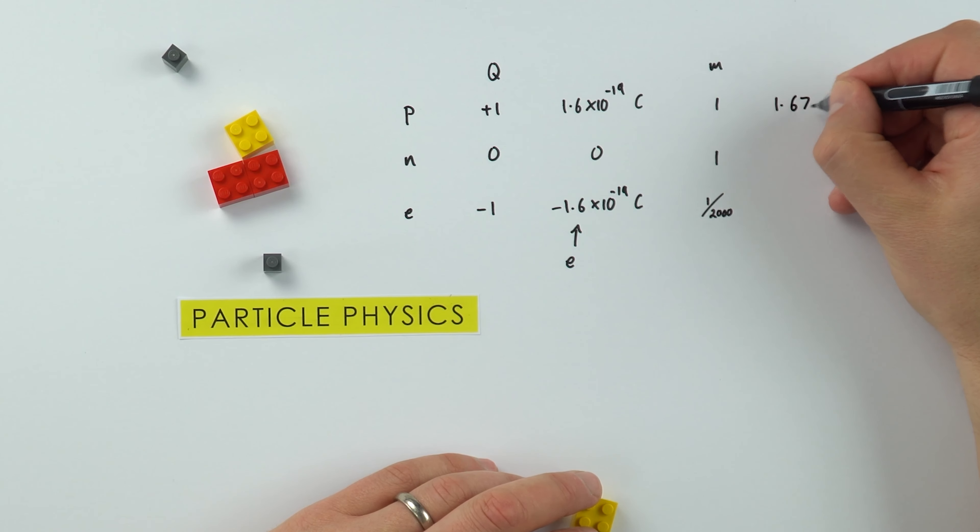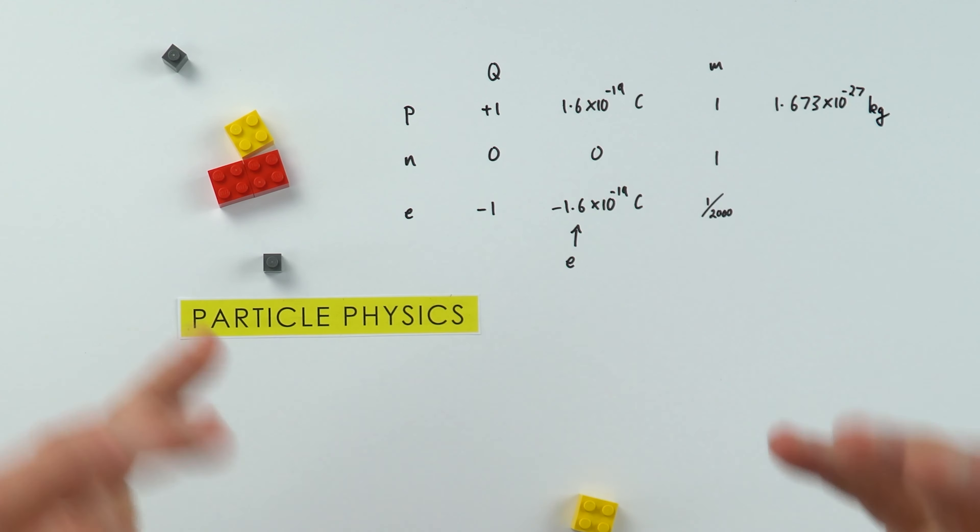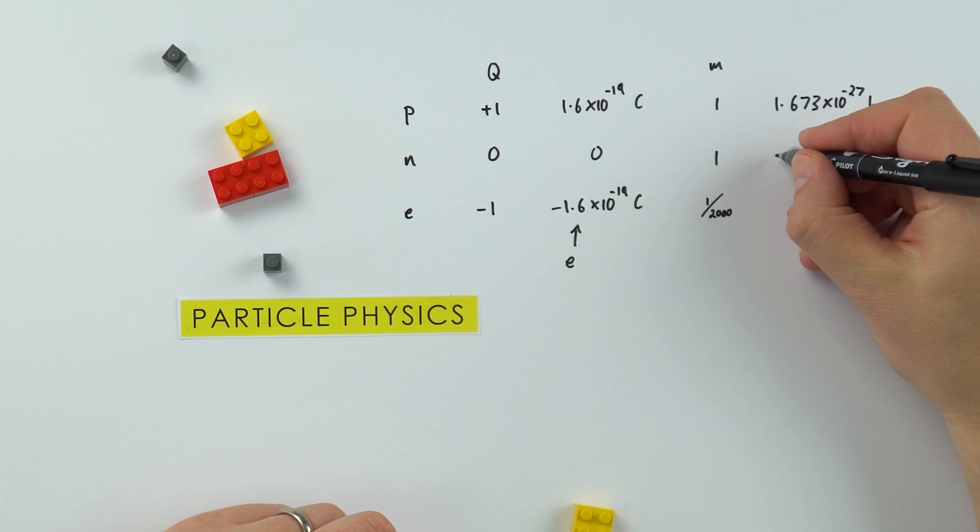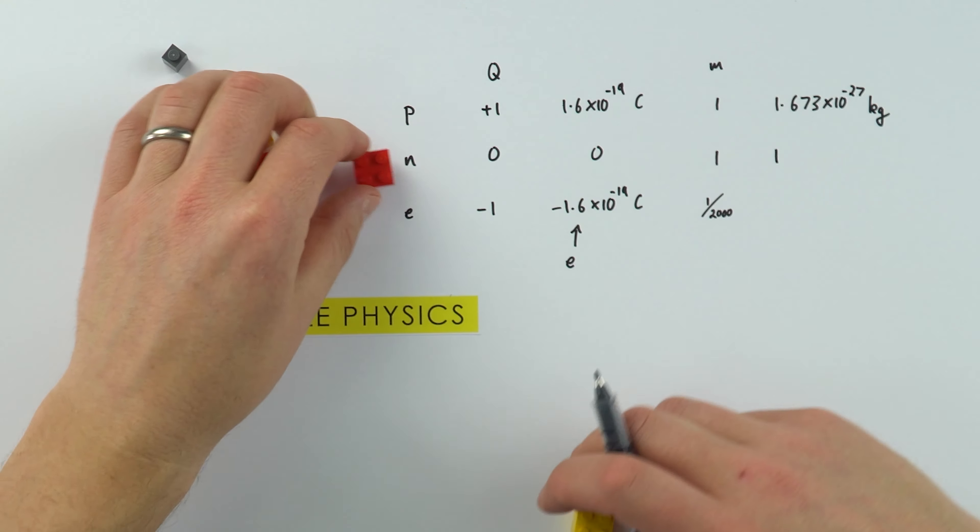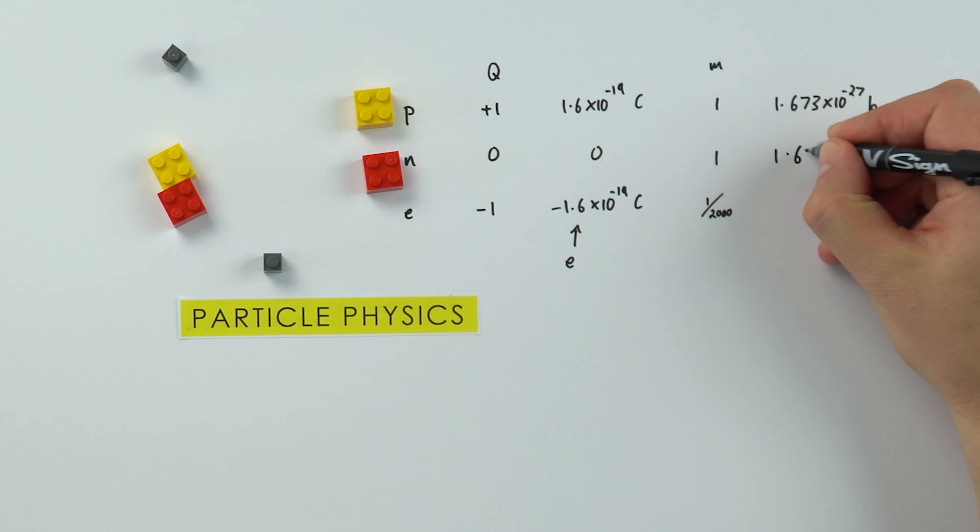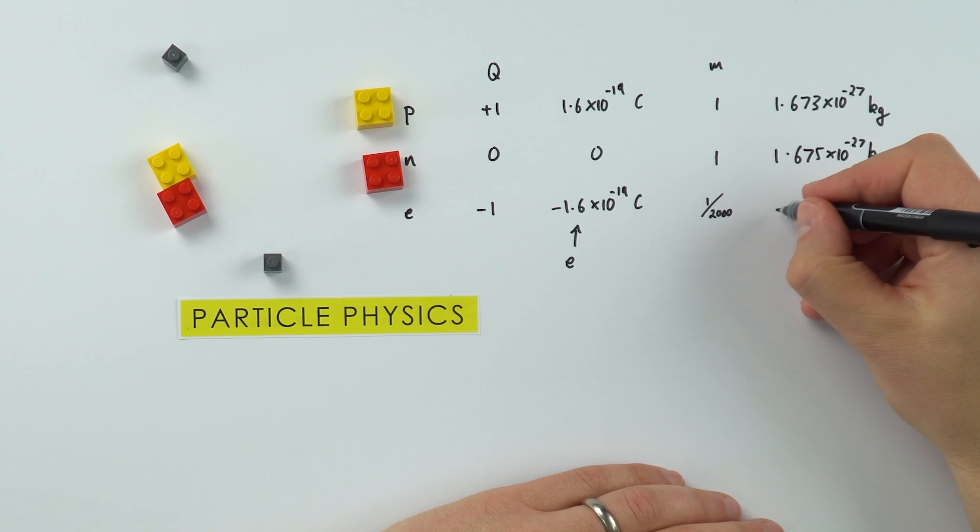That's really really light. If we look at one of these neutrons that we have over here, that's 1.675 times 10 to the minus 27 kilograms. And the rest mass of the electron is 9.11 times 10 to the minus 31 kilograms.